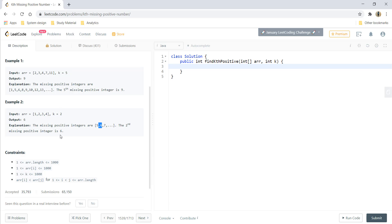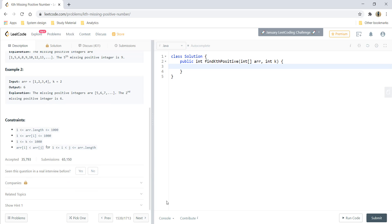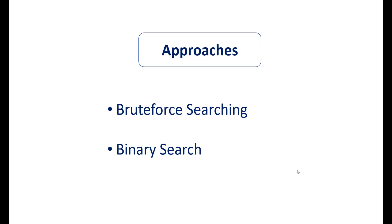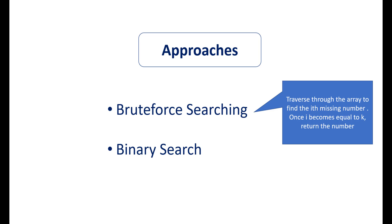Now let's see how we can solve this question. There are different ways we can solve this problem. First is by using brute force searching. In this brute force approach, we traverse through the array to find the ith missing number. Once i becomes equal to k, we return the number we have found. This method would take a time complexity of O(n).